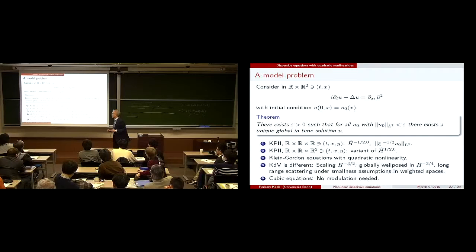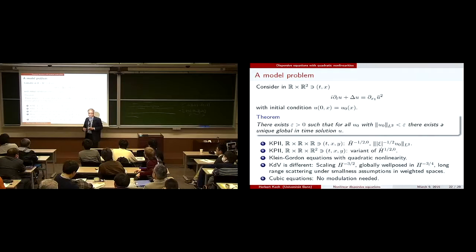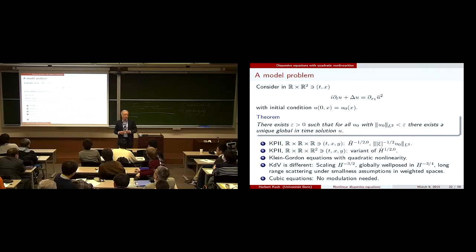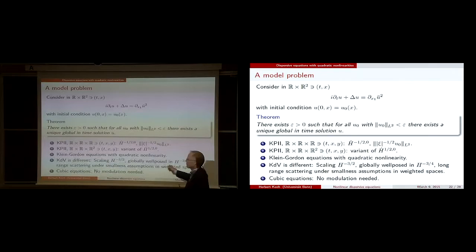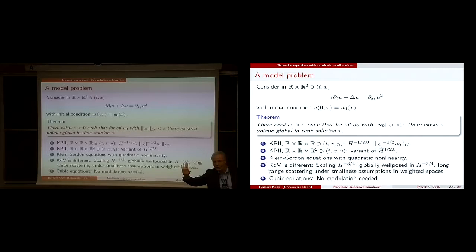I should say that the KdV equation itself is different. The scaling space for KdV has minus 3/2 derivatives; the best well-posedness is at minus 3/4 derivatives. One might expect well-posedness at minus 1 derivative but not at minus 3/2. The consequence is that for KdV, it is much harder to get a global understanding of solutions. There is inverse scattering giving lots of information, but if you stick to PDE tools you get some sort of long-range scattering where something is visible from the initial data even at large times.